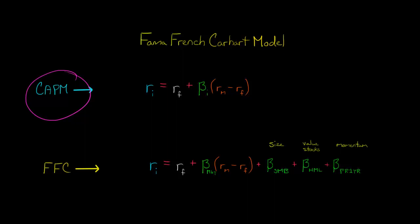We started by looking at the capital asset pricing model, and we modeled the expected return of security I as a function of the risk-free rate of return plus beta for that security, which is a measure of systematic risk, and then we multiply that by the market premium.